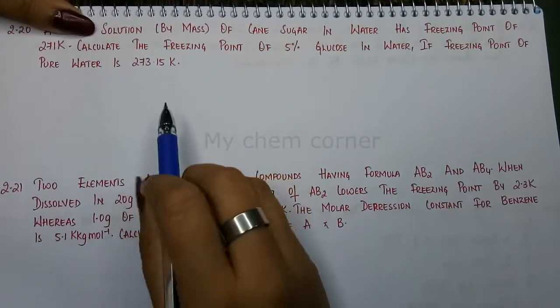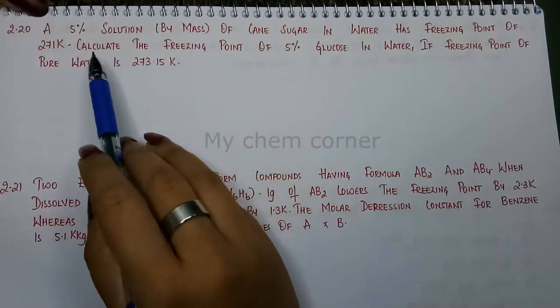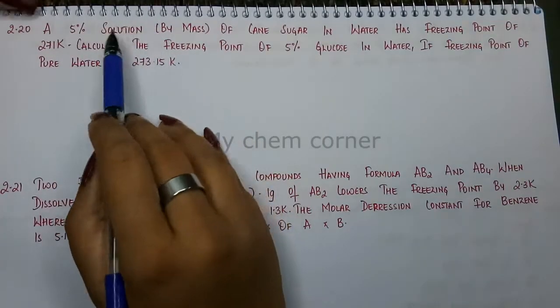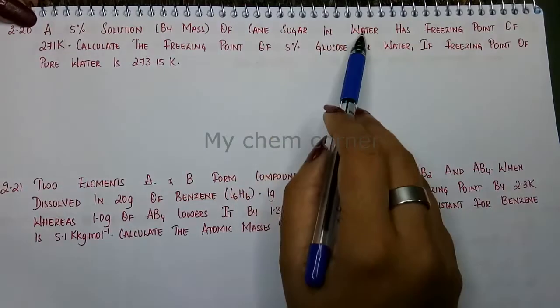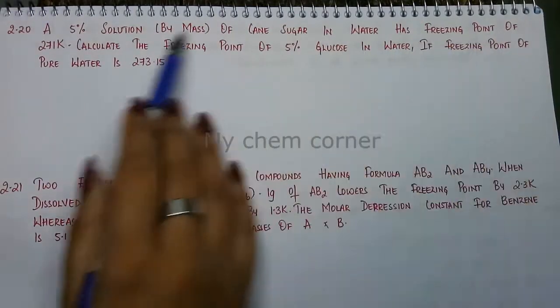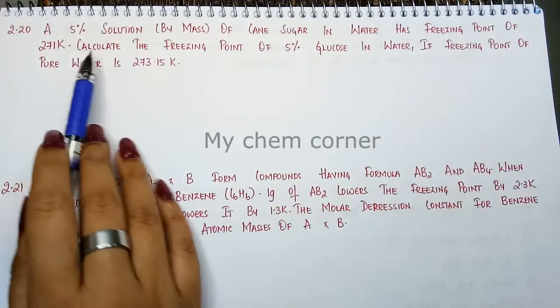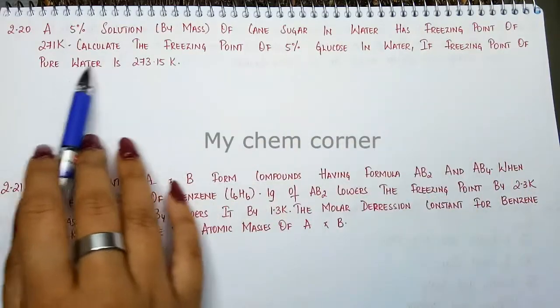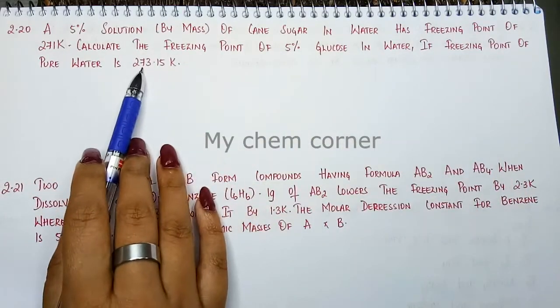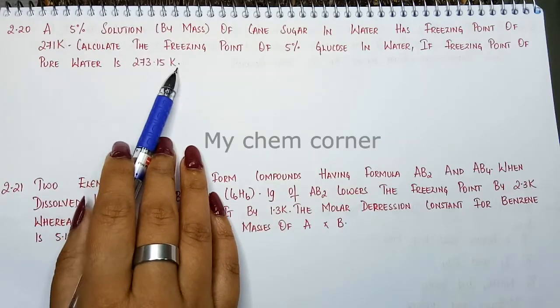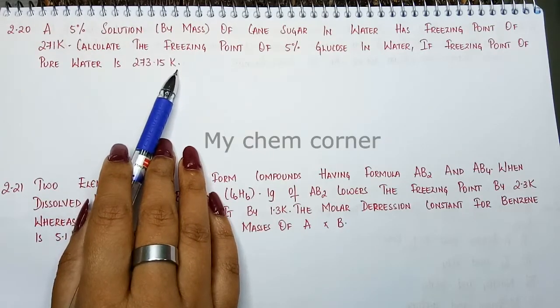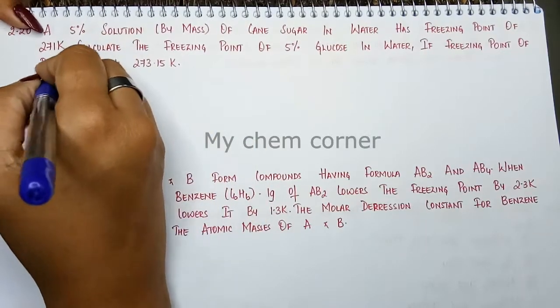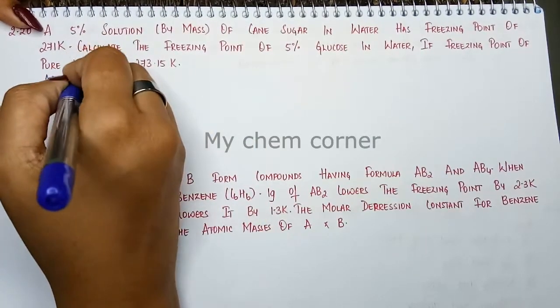Next question is question number 2.20. Here it says that a 5% solution by mass of cane sugar in water has a freezing point of 271 Kelvin. Calculate the freezing point of 5% glucose in water if the freezing point of pure water is 273.15 Kelvin. The question is for freezing point, so let's write the formula.